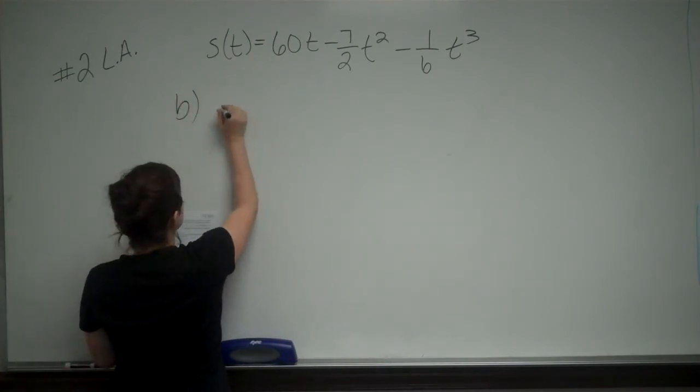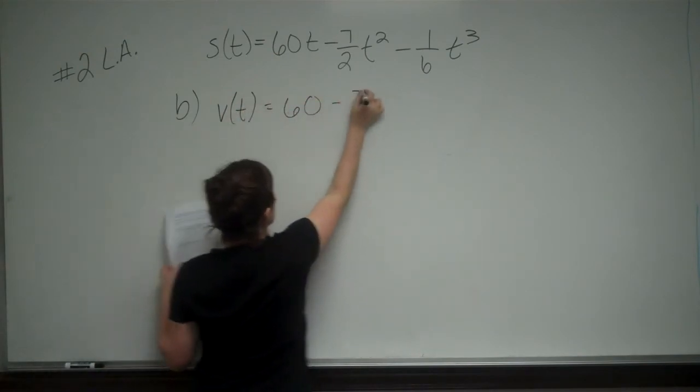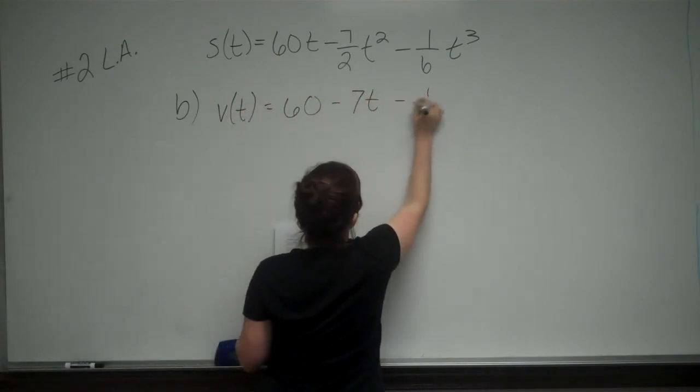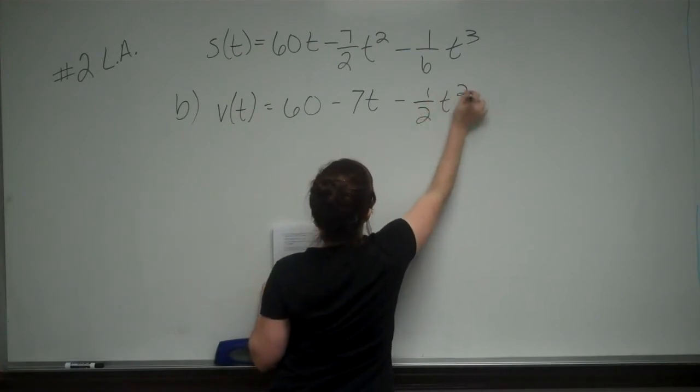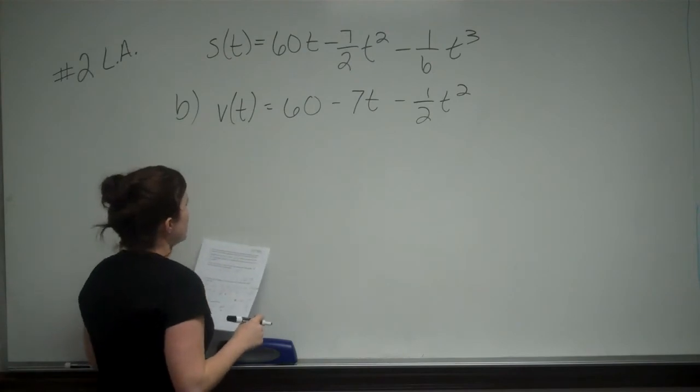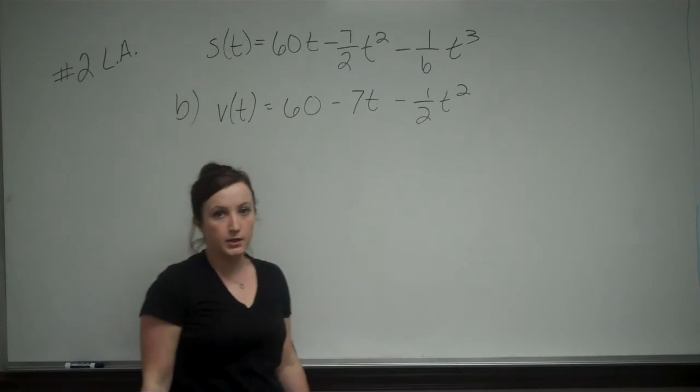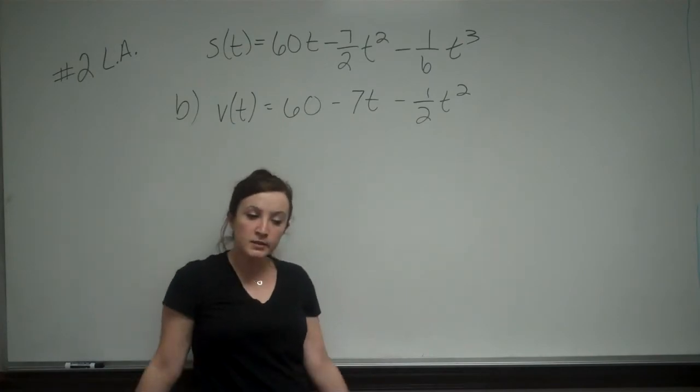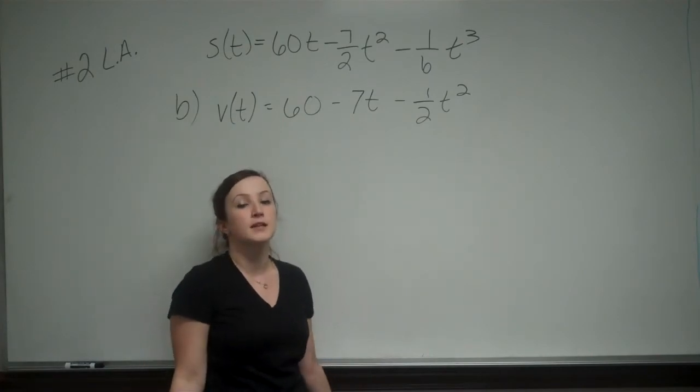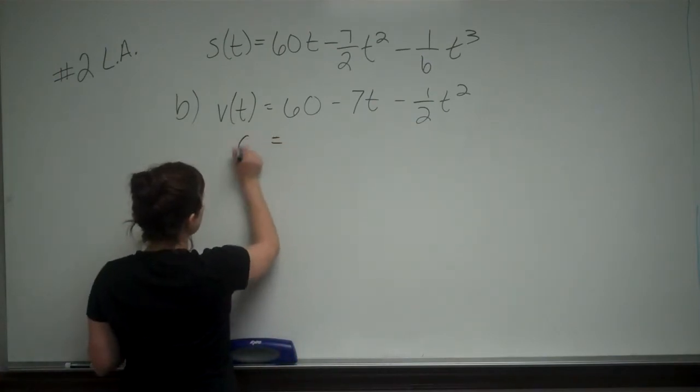So this is part B, our velocity formula. And there we have our velocity formula. So what is the velocity at the time that the car is stopped? If the car is not moving, we know that our velocity is going to be 0. So we need to set this equation equal to 0.